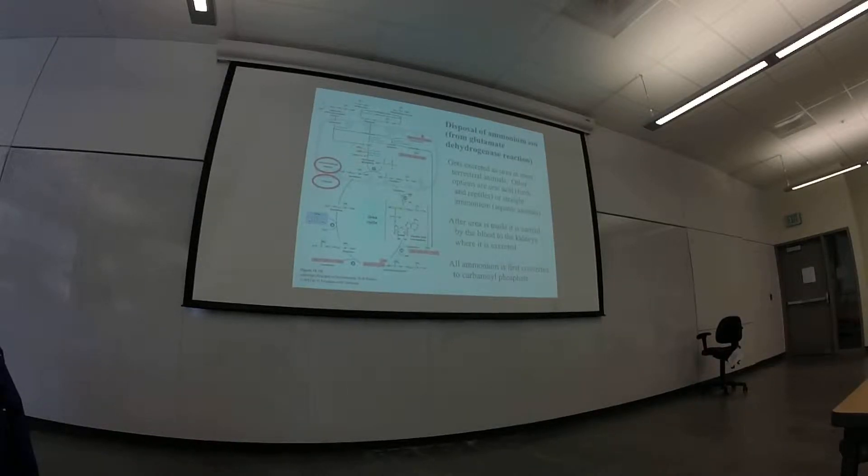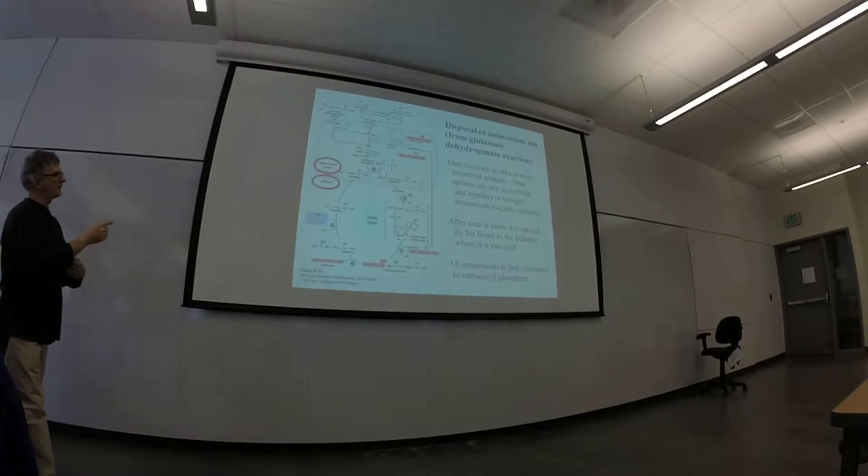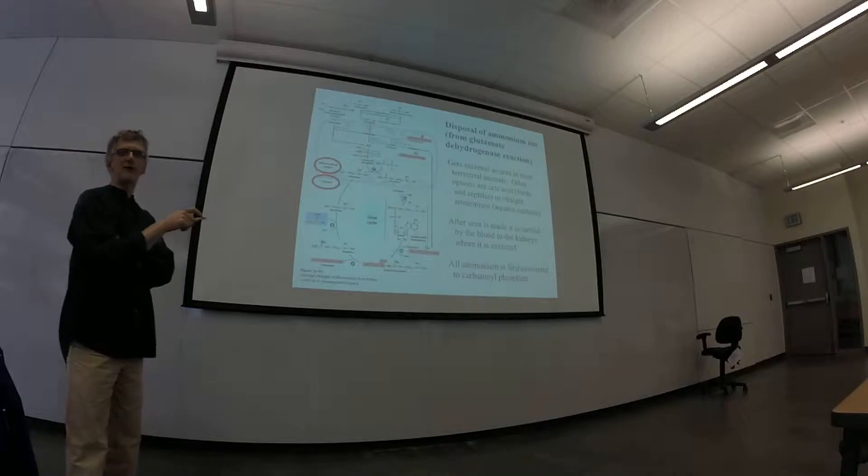So it seems to me that when you build up this extra alpha-ketoglutarate by taking the ammonium off the glutamate, that this can also provide metabolic energy because it's going to go through the TCA cycle.